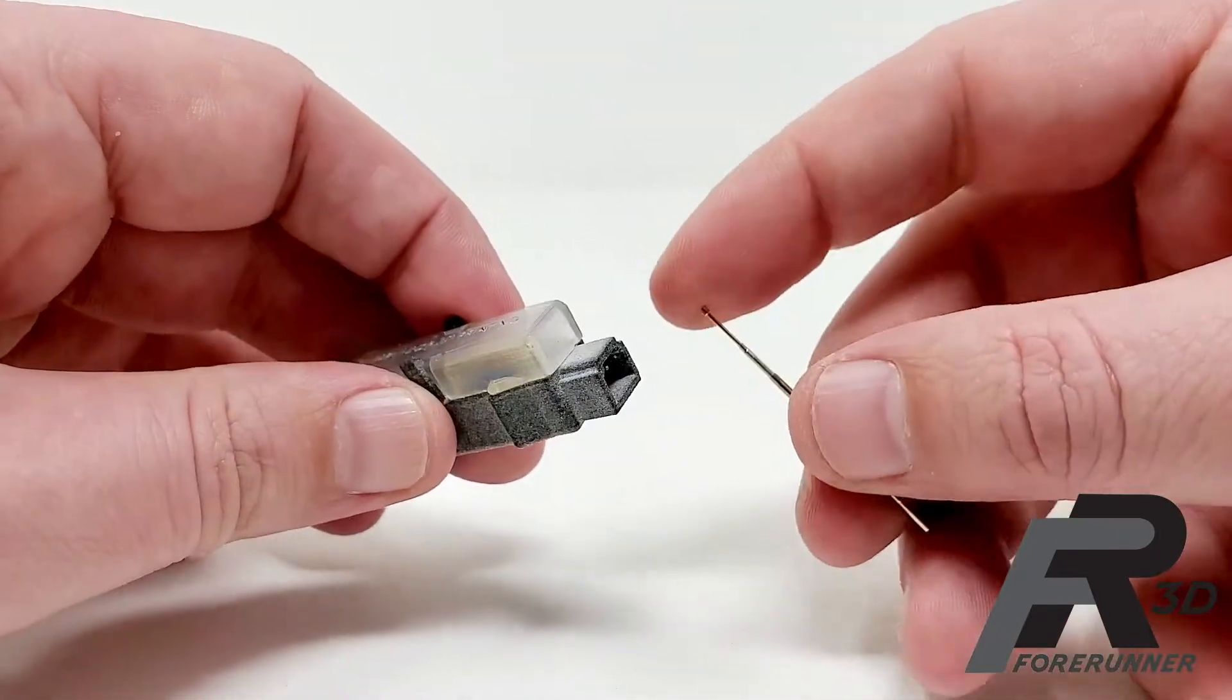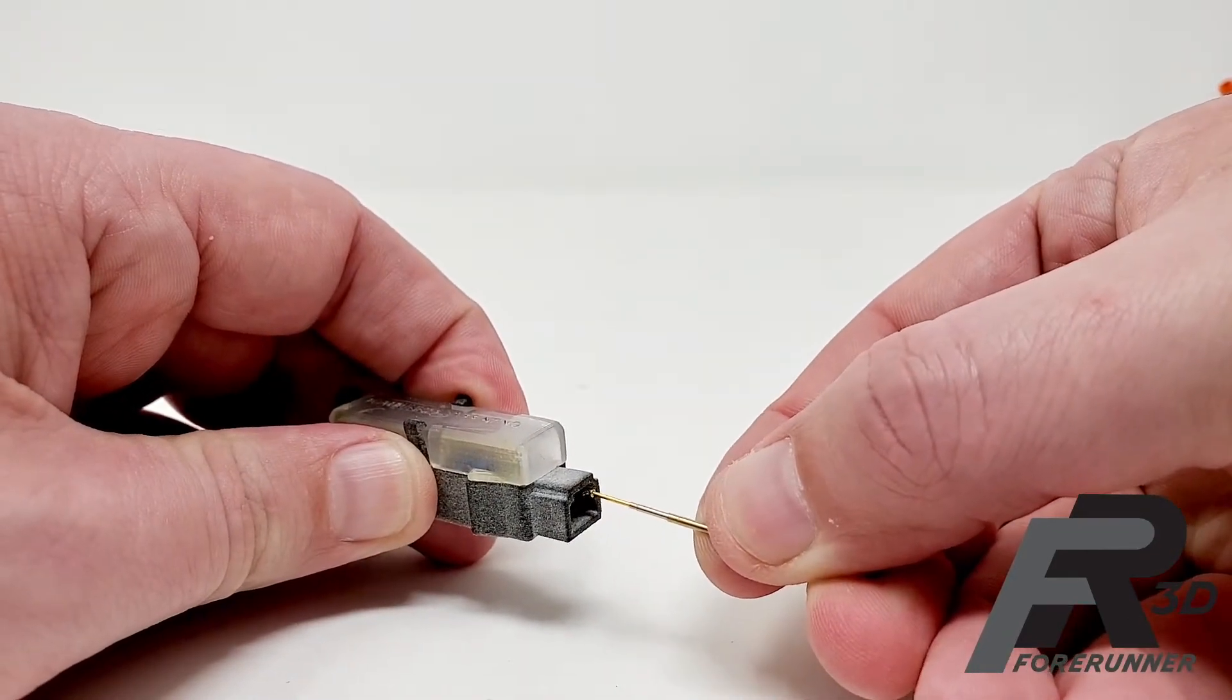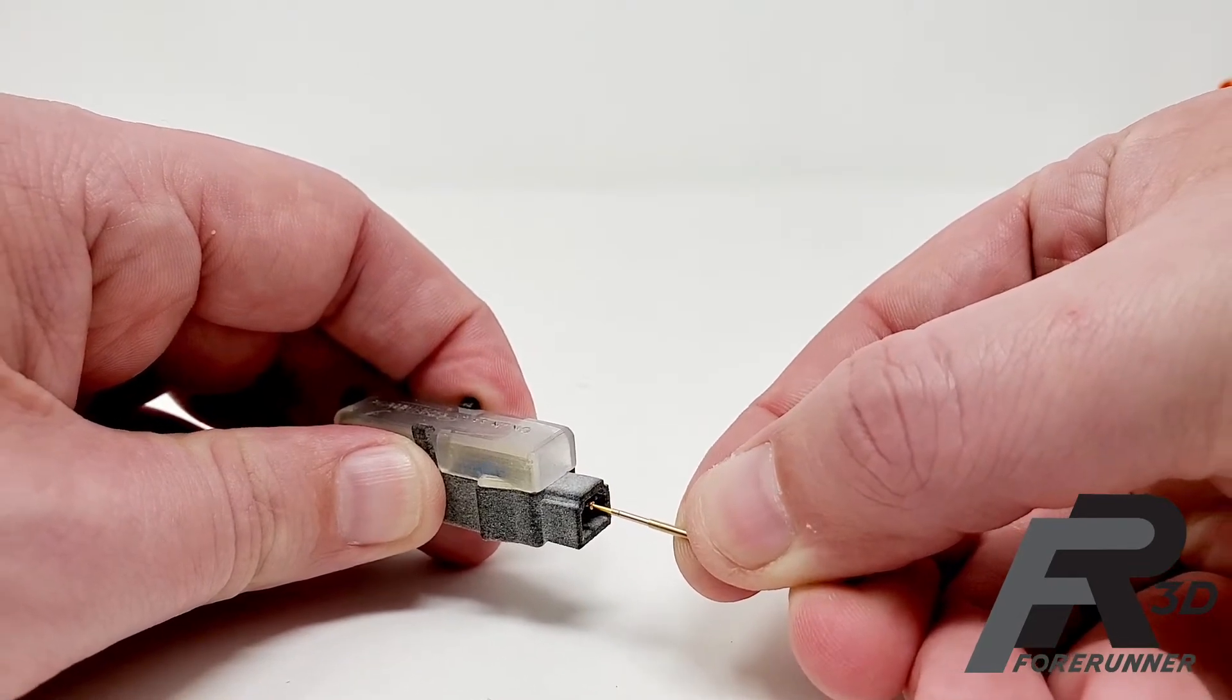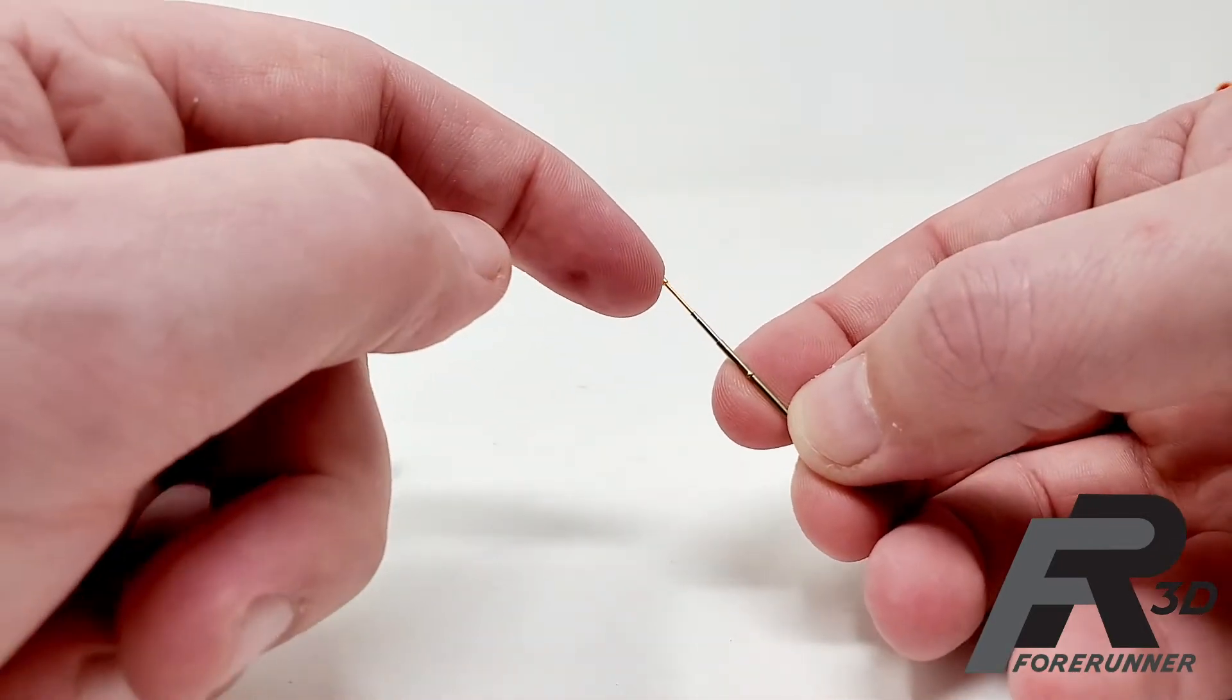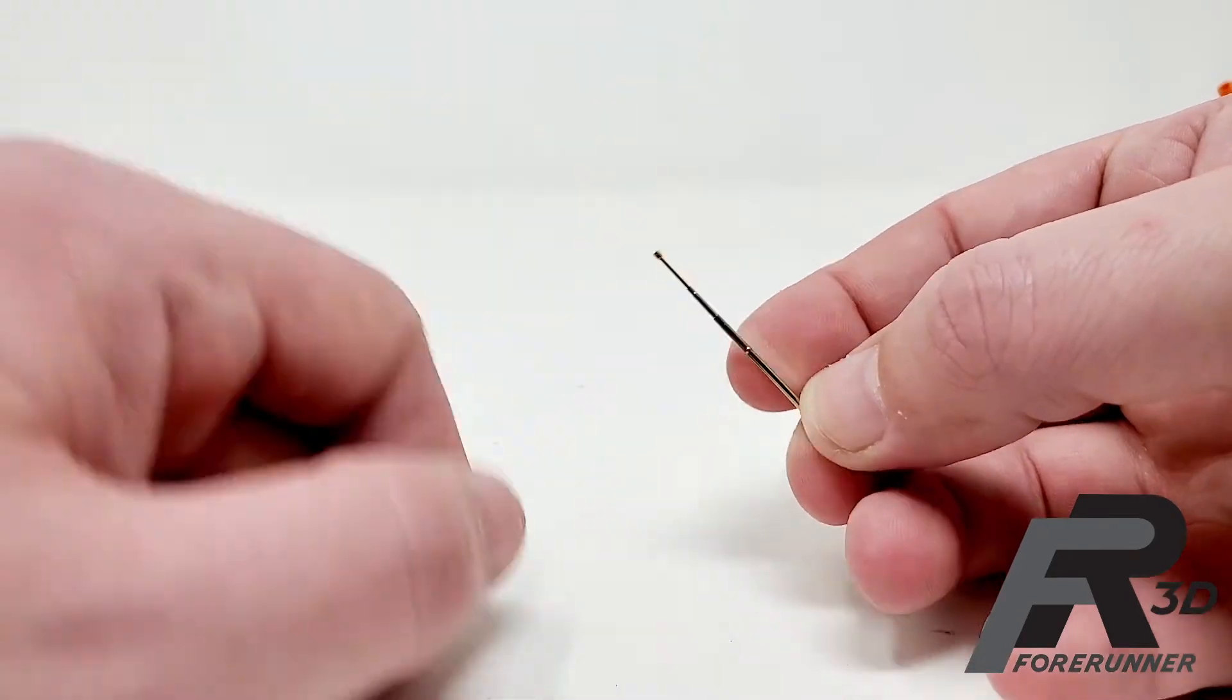It comes into contact and compresses. Obviously you have one for either lead and when they touch they can energize this. These compress so that you can make sure you get a good solid connection with whatever you're trying to energize or pull data off of.